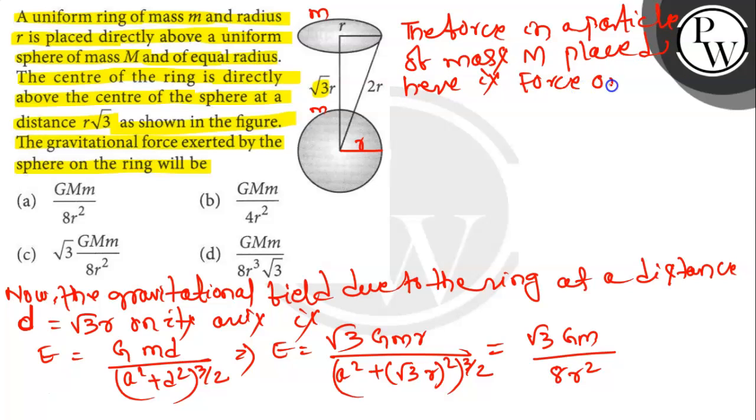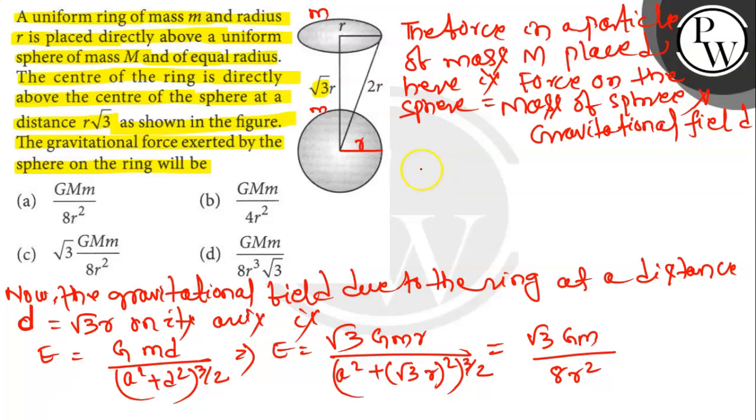Force on the sphere equals mass of sphere times gravitational field. So here F equals m times E. We'll put the values here: F equals root 3 G m M divided by 8 r squared. This is also the force due to the sphere on the ring. Option number C is the correct answer. Thank you.